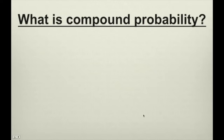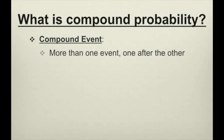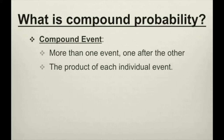What exactly is compound probability? Compound probability is basically just regular probability, but instead of a single event, you have compound events. Compound events are when you have more than one event, one after the other, and the probability is the product of each individual event.